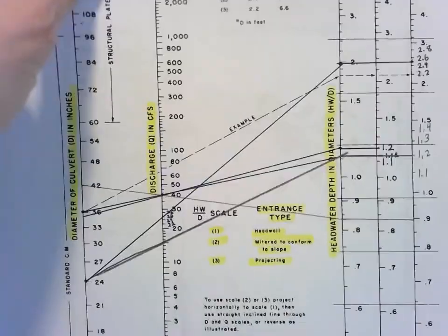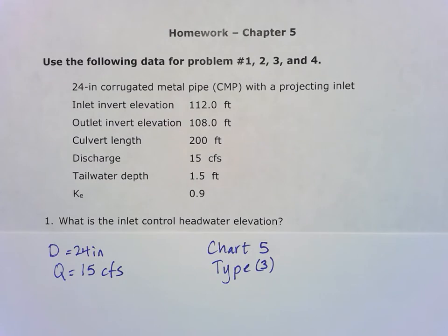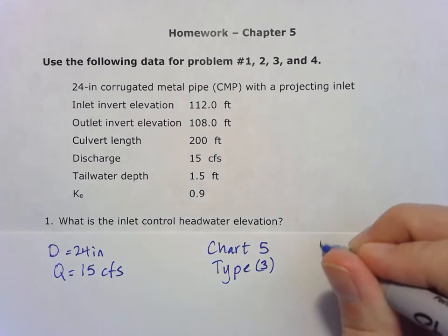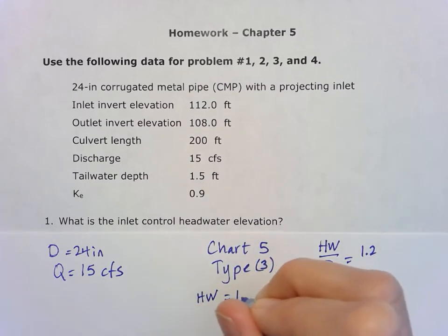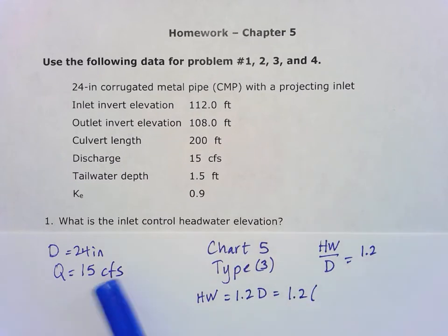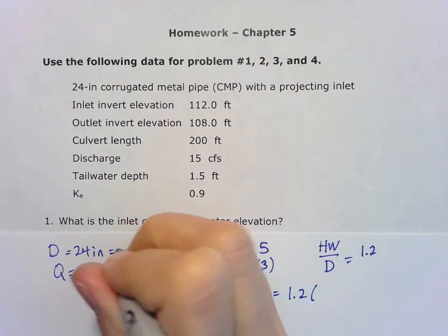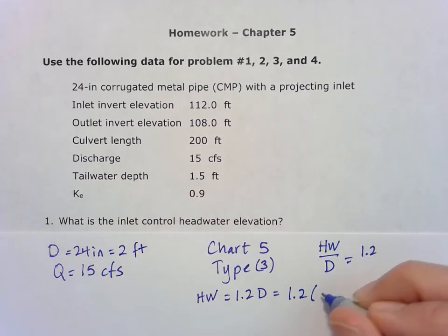Let's write that on the next page. I found that HW/D equals 1.2. To find the headwater, I multiply 1.2 by D. Taking the diameter and changing it to feet, 24 inches equals 2 feet. So 1.2 times 2 feet gives me 2.4 feet for the headwater depth.